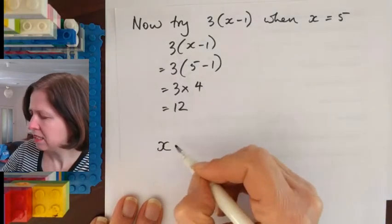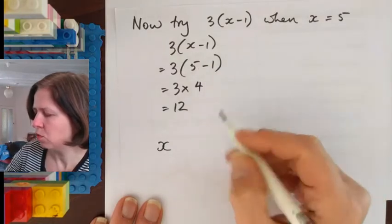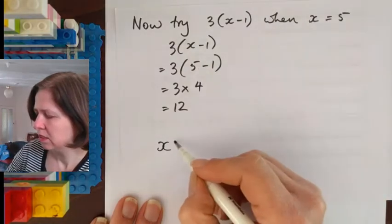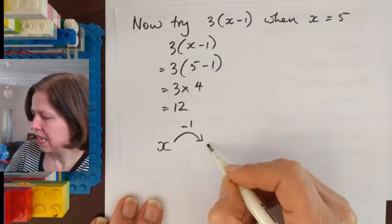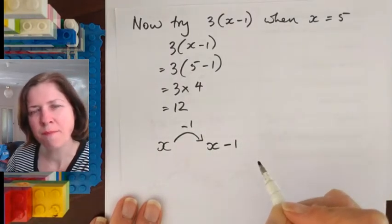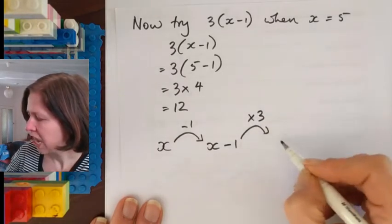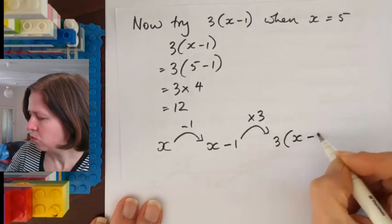So I started with x and the first thing I do here is I subtract the 1. The first thing I did was go 5 minus 1. So I subtract 1 to get x minus 1 and then I multiplied by 3 which gave me 3 times x minus 1.